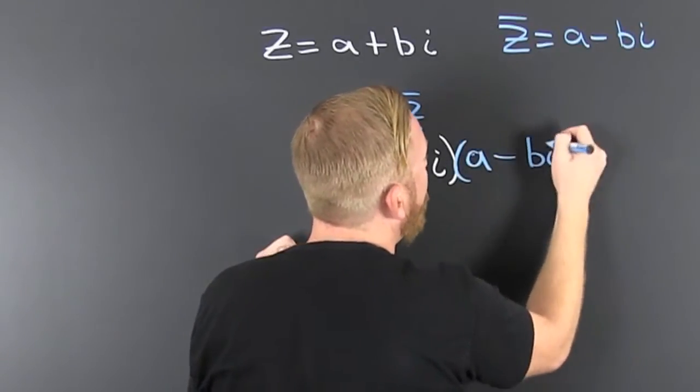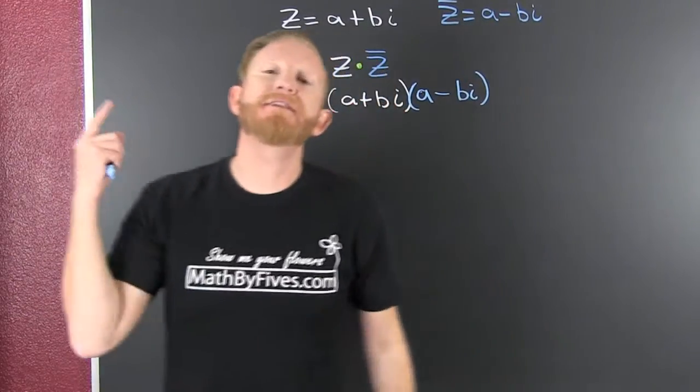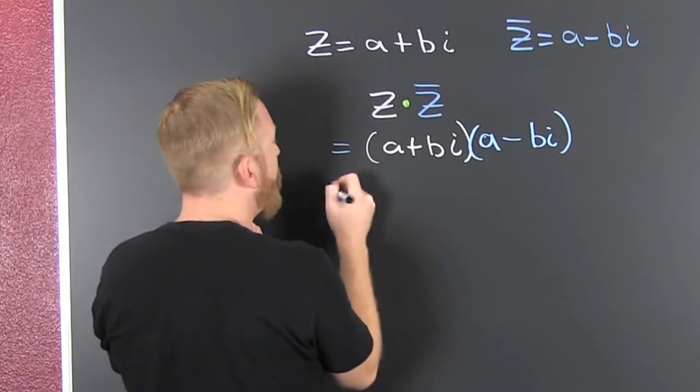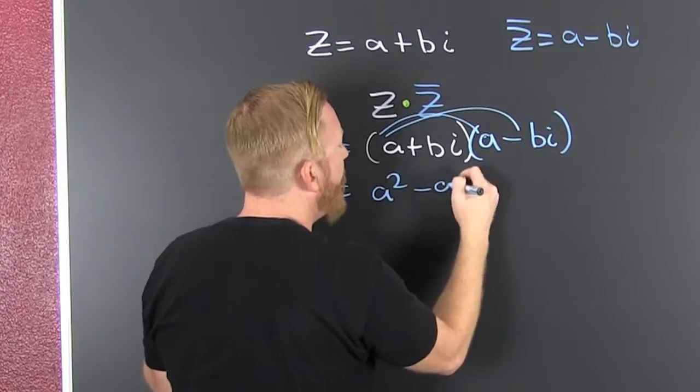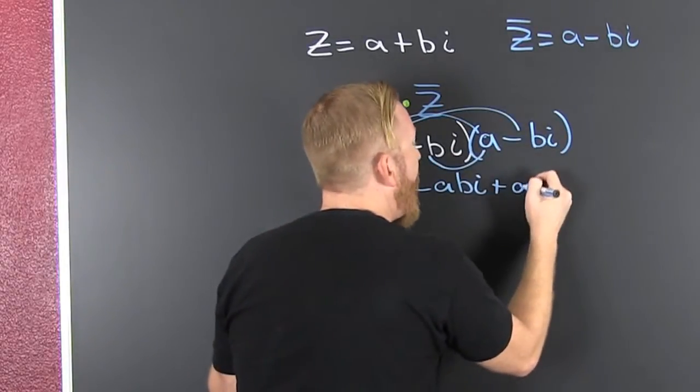What are we going to do? We're going to FOIL it, first outer inner last, to see if we can get a nice form for that product. So then I first, boom, that's a squared. Then I outer, that's minus abi, and then that's inner plus abi.